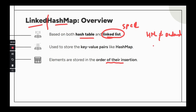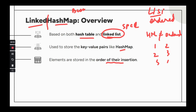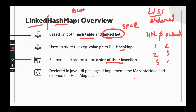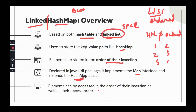A normal HashMap is not ordered — if you add one, two, three, traversing it might print two, three, one. But lists are ordered by nature. We want the best of both worlds: hashing for key-value storage and ordering for maintaining insertion order. That's why LinkedHashMap was introduced — declared in java.util, implements the Map interface, and extends HashMap.